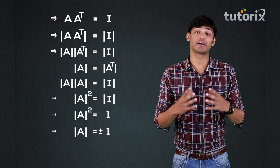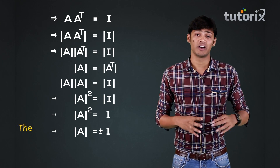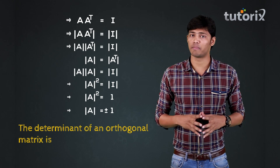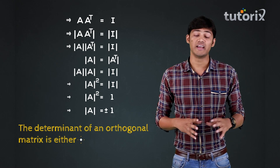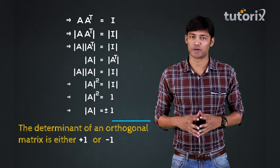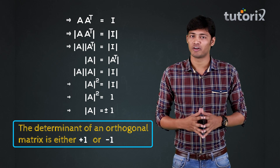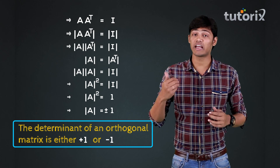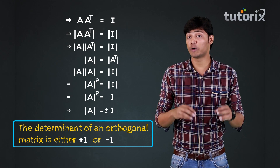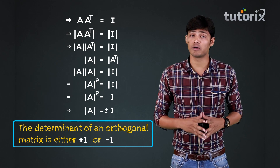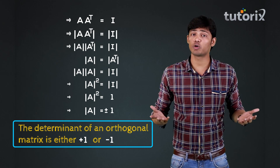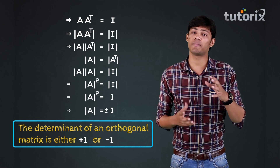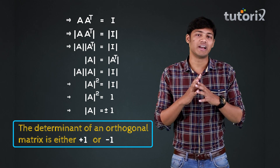So friends, we can conclude that the determinant of an orthogonal matrix is either plus 1 or minus 1. That's all for today. In our next video, we will be doing some problems relating to the properties of the transpose of a matrix. As of now, let's summarize what we have learned so far.